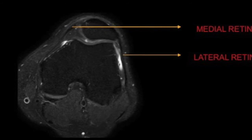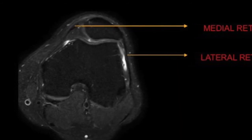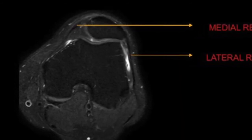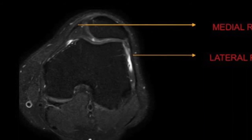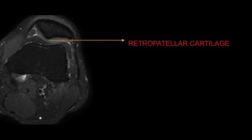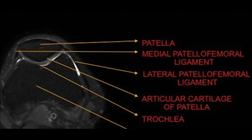They look like low signal intensity structures and are actually a condensation of two layers of fibers. The retinacula is made up of both the superficial and the deep layer of fibers extending from the patellar margin, continuous with the vastus medialis obliquus fascia, whereas the patellofemoral ligament is the deeper fibers extending from the patella and inserting into the medial epicondyle of the femur.